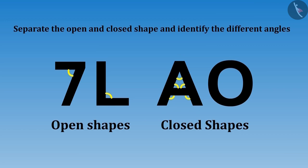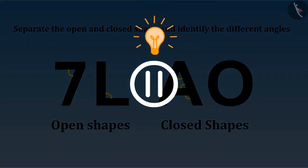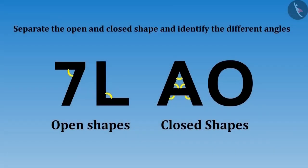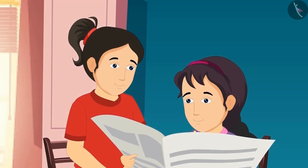Is Reva's answer correct? If you want, you can pause the video here and think for a while. Reva, you have identified the angles in A correctly. This is not a closed shape but an open shape. Really? But how is it sister?